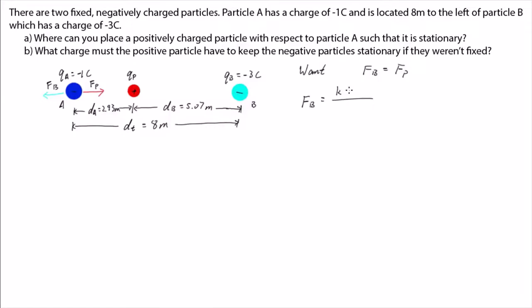Using Coulomb's law again, we get these two equations. Equating them and cancelling terms. Putting in the numbers and then solving for QP.